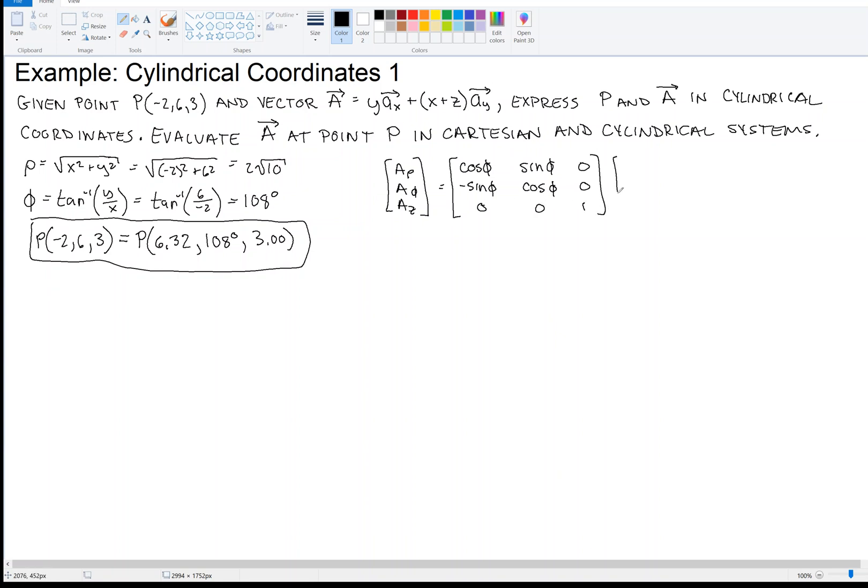We multiply that by the x component, y component, z component. So what is the x component in our vector field? That's y. And what is the y component? That's x + z. And there is no z component, 0.